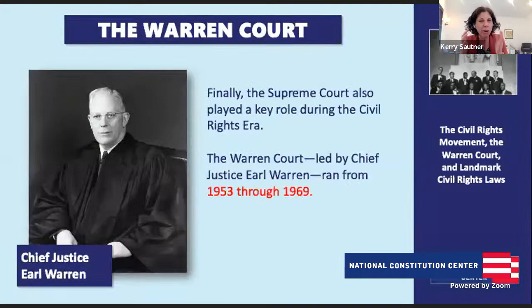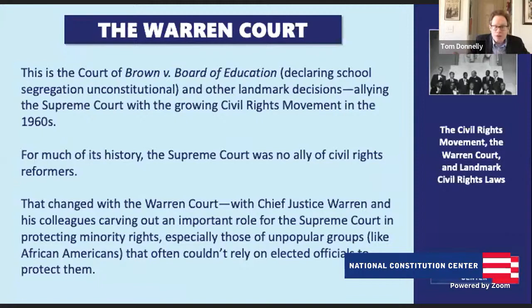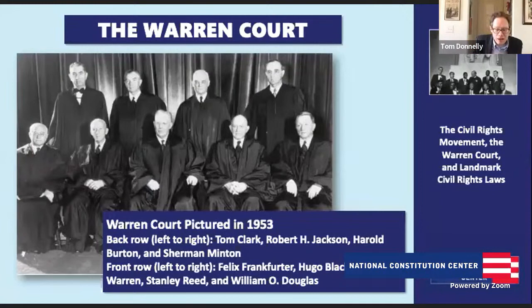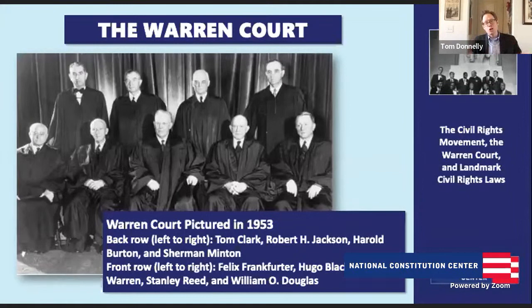Before moving on from groups, let's talk about the Warren Court and how it became a key factor in changing civil rights. The Warren Court ran from 1953 to 1969, named after Chief Justice Earl Warren. It plays a key role throughout the civil rights era — this is the court that brings us Brown v. Board of Education, declaring school segregation unconstitutional, and Loving v. Virginia, striking down laws that kept African-Americans and white Americans from marrying. It was really a key ally of the civil rights movement, different from the role the Supreme Court played in many other periods.